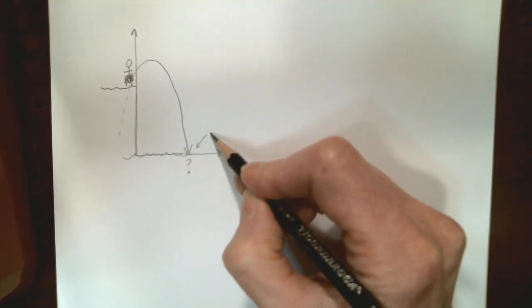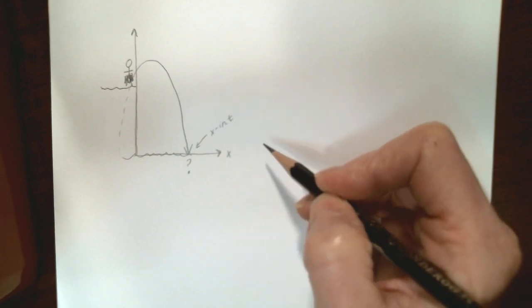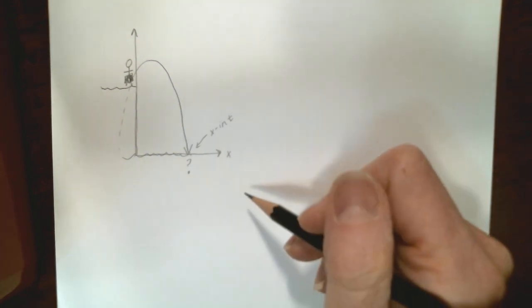And in this case, this is the x-intercept of this parabola. And our goal is to factor quadratic functions in order to find the x-intercepts.